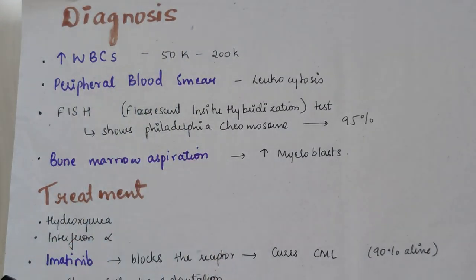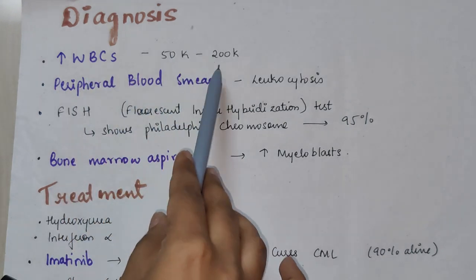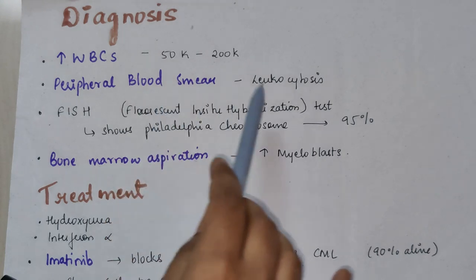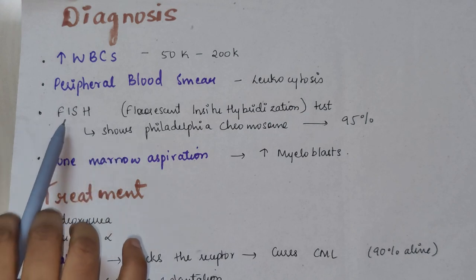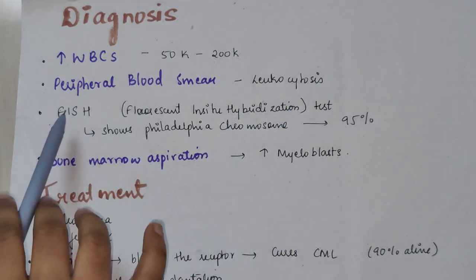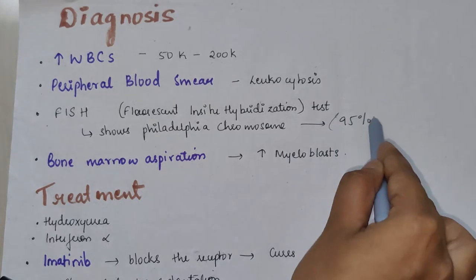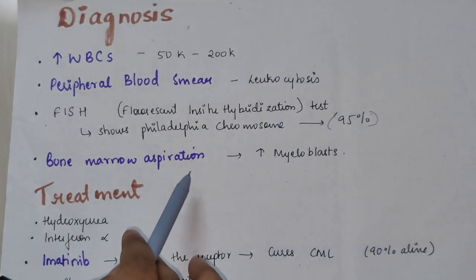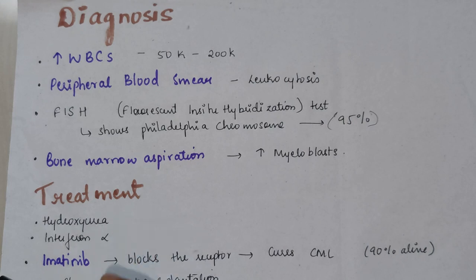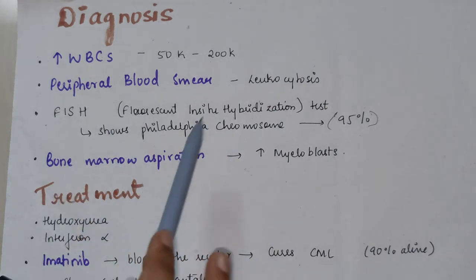For diagnosis of CML, whenever we see an increased number of WBCs — up to more than 50,000 to 200,000 — we do a peripheral blood smear, which shows leukocytosis. There is a specific test called the FISH test, or fluorescent in-situ hybridization test, which glows up the Philadelphia chromosome and can be seen in 95% of cases. Bone marrow aspiration, a painful process where they puncture with a needle and aspirate the marrow, usually shows increased myeloblasts.